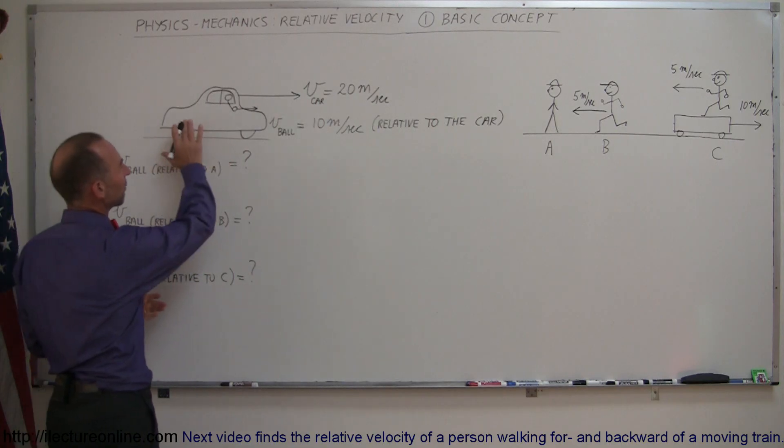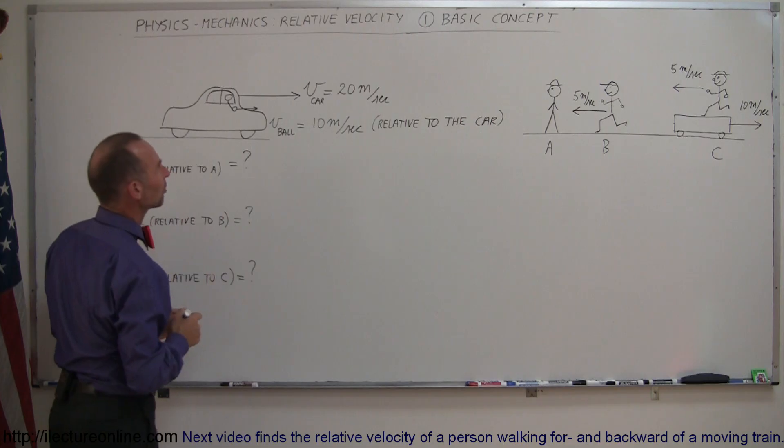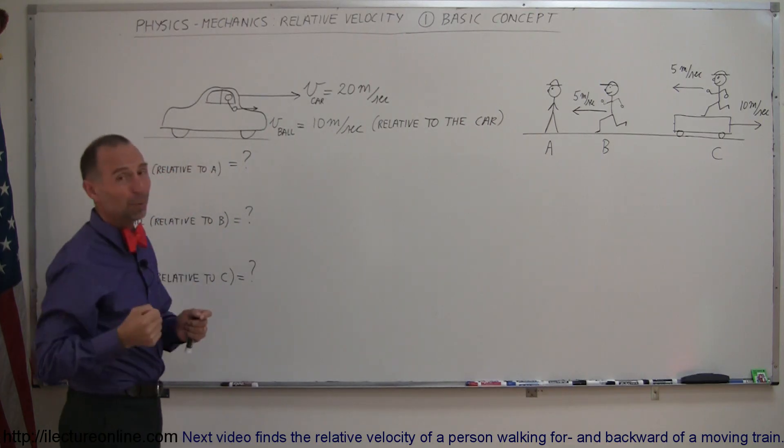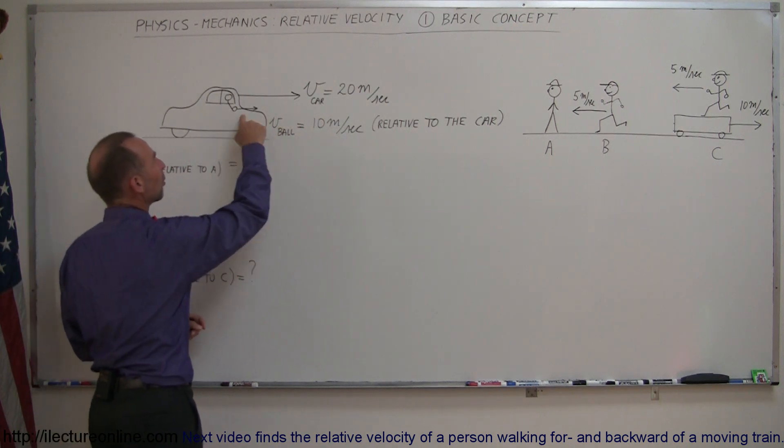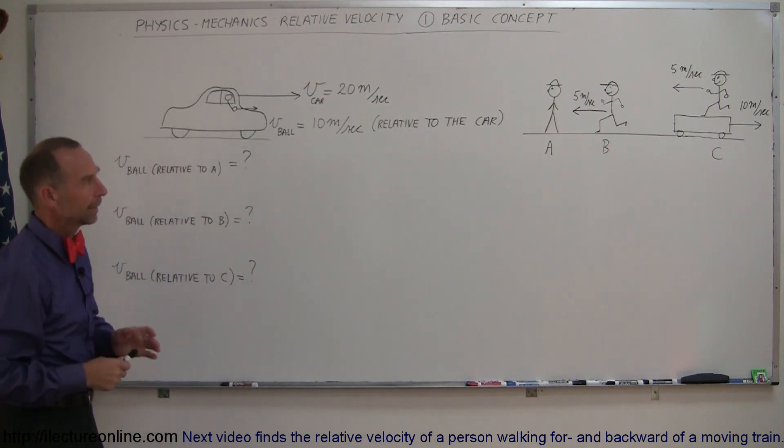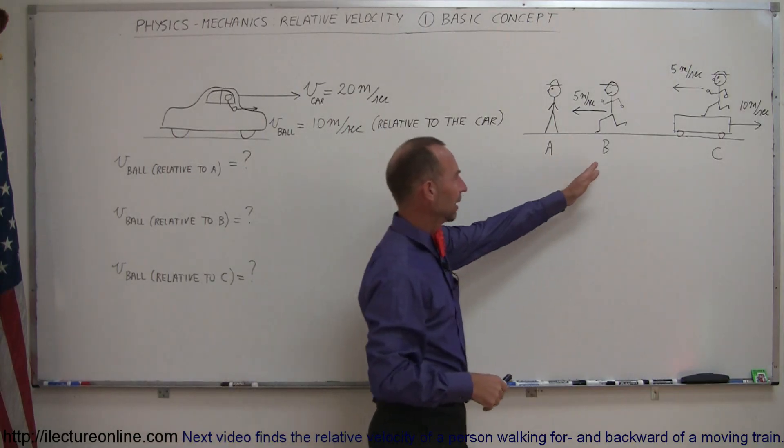Here we have a car that's driving to the right at 20 meters per second. The driver opened up the windows, takes his arm out, and throws a baseball at 10 meters per second relative to the car. Then I have three observers here, A, B, and C.